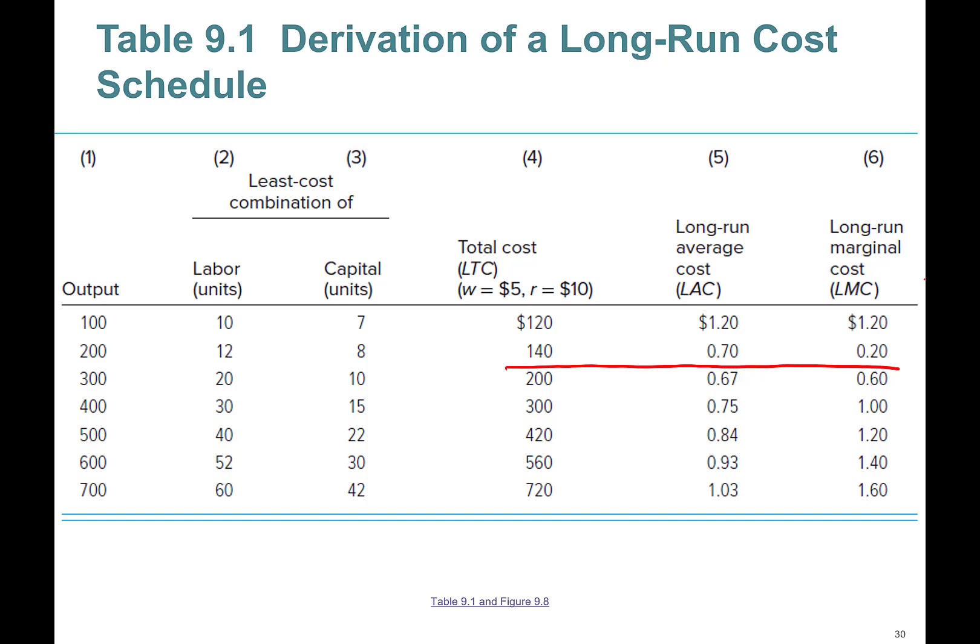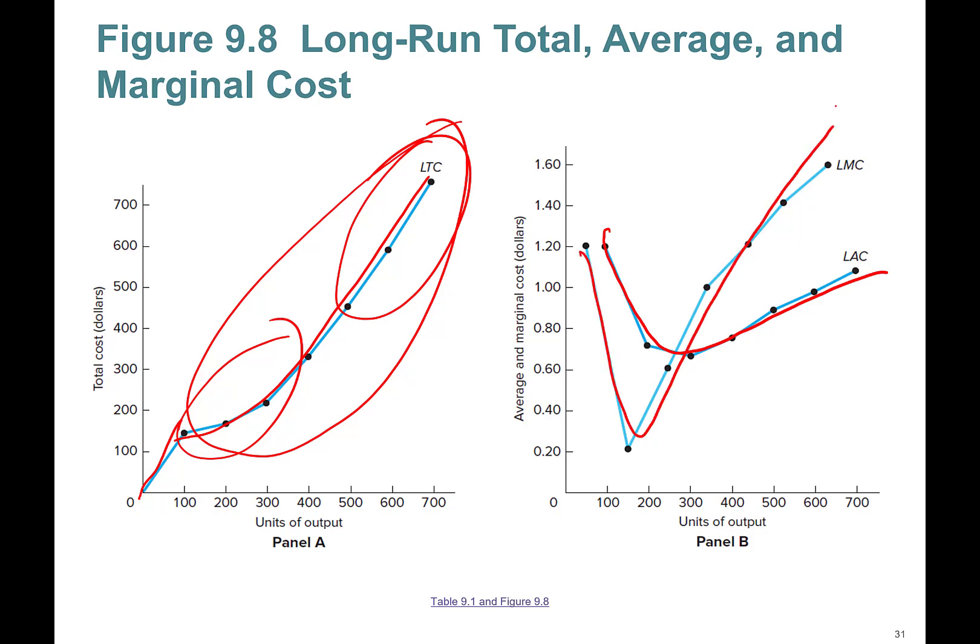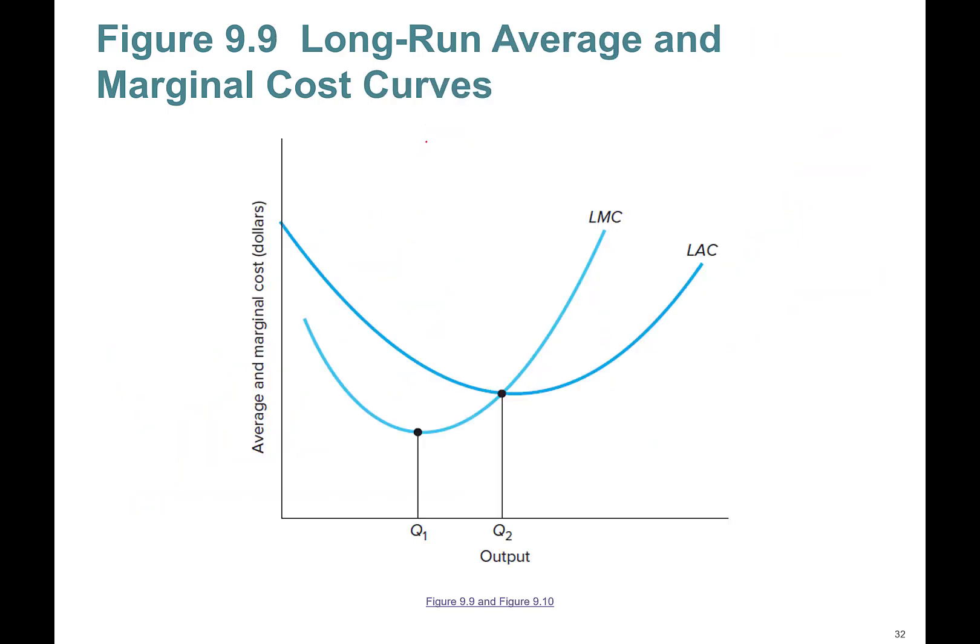Complete this table, and if you draw these curves, you'll find long-run total cost increases at a slower rate, then it's going to increase at a little faster rate. Long-run average cost curve is U-shaped, and long-run marginal cost curve is also U-shaped with prettier graphs. Long-run marginal cost cuts through the lowest point of LAC.